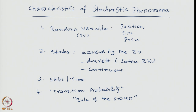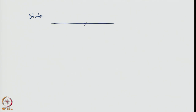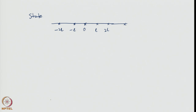So these four — random variable, states, steps, and transition probability — are some key definitions in understanding or defining a stochastic process. Let us dwell a little more on what is meant by states. When we discuss the random walk on a lattice, states are those fixed jump positions — for example, starting from the origin: plus L, 2L, etcetera, minus L, minus 2L. These fixed points in space one can call a state of the system, so that one can ask what is the probability of transition from one lattice point to another.